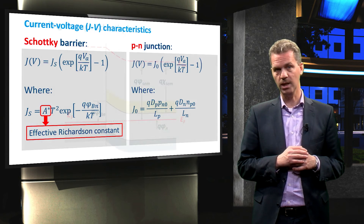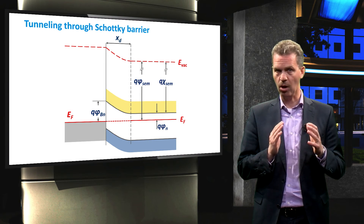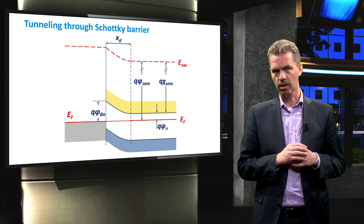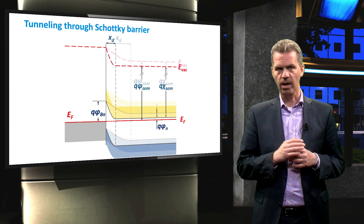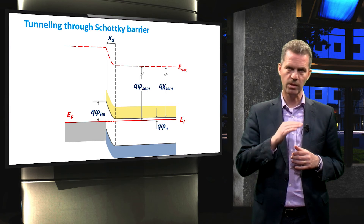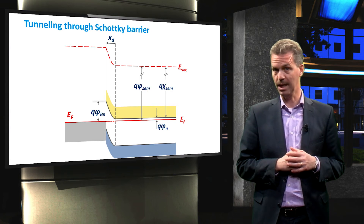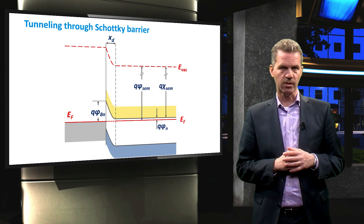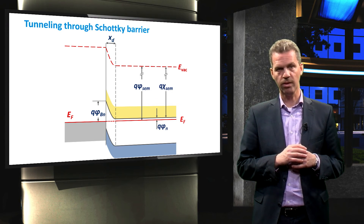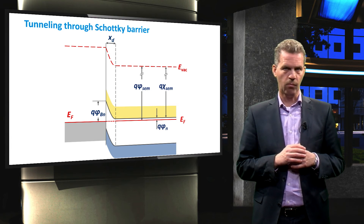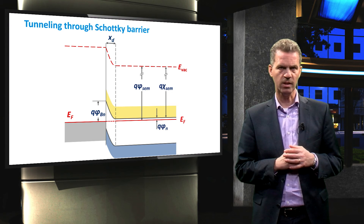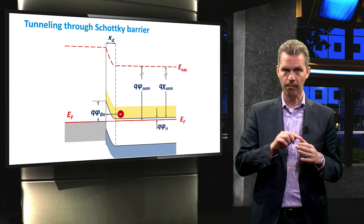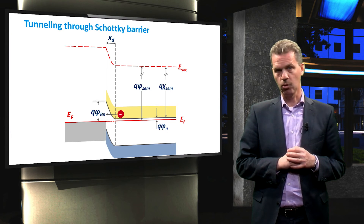So far we have considered situations where the depletion region is fairly wide and only thermionic emission is important. When we increase the doping concentration in the semiconductor, the situation changes: the conduction band and valence band move downwards, but since the Schottky barrier height phi_BN remains the same, the built-in voltage becomes larger. In addition, the depletion region width becomes smaller. If the width becomes small enough, electrons in the conduction band may penetrate through the Schottky barrier rather than being emitted over it — a process called tunneling.